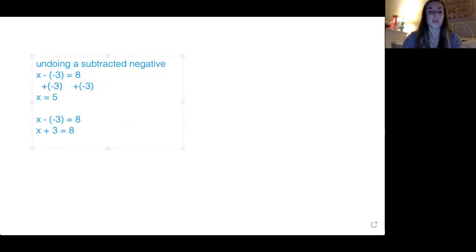So now at this point, we would just subtract three from both sides. And once we do that, we'll have X by itself on the left and eight minus three, which is five. So as you can see, we still get the same answer.